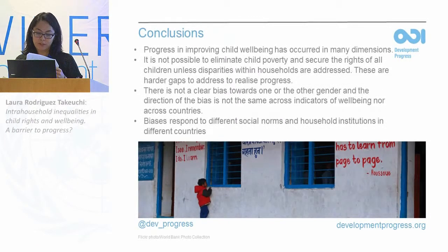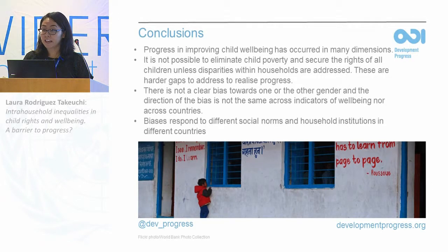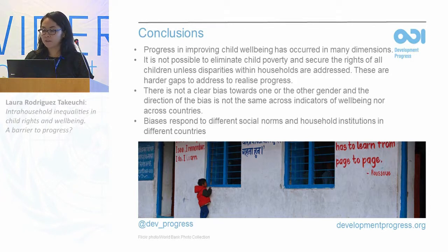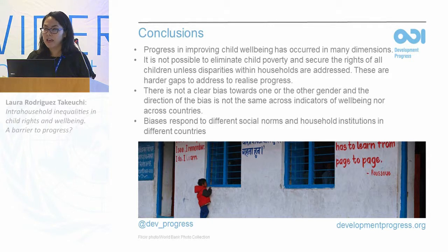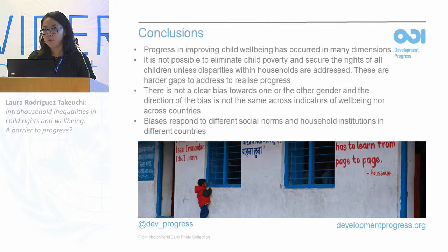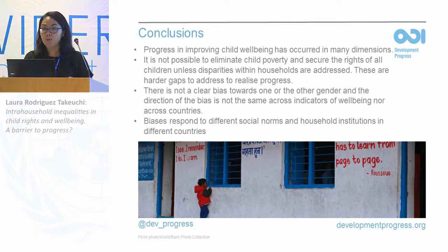In conclusion: although there has been huge progress in many indicators of child well-being, it is not possible to eliminate child poverty and secure all the rights of children unless these types of disparities are addressed — they are often the harder gaps to realize progress on. Second, there is no clear bias against one gender or the other; it depends heavily on the country and on the indicator or combination of indicators. This may be because biases respond to different social norms, household institutions, and marriage institutions, which differ across countries. More research is needed to understand what policies would be most effective in addressing these types of inequalities.